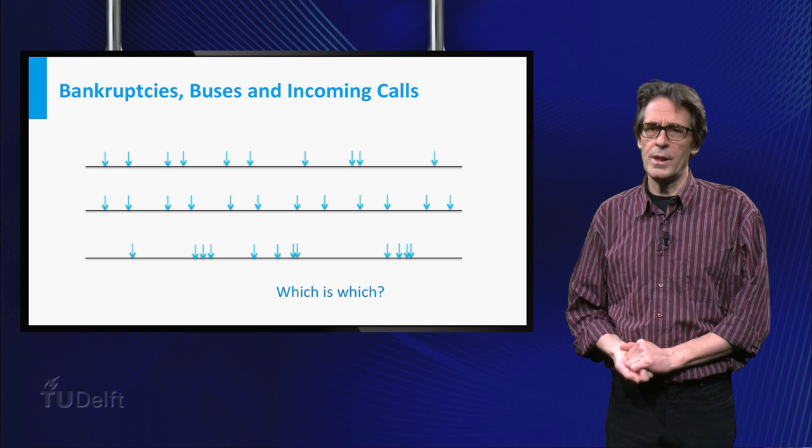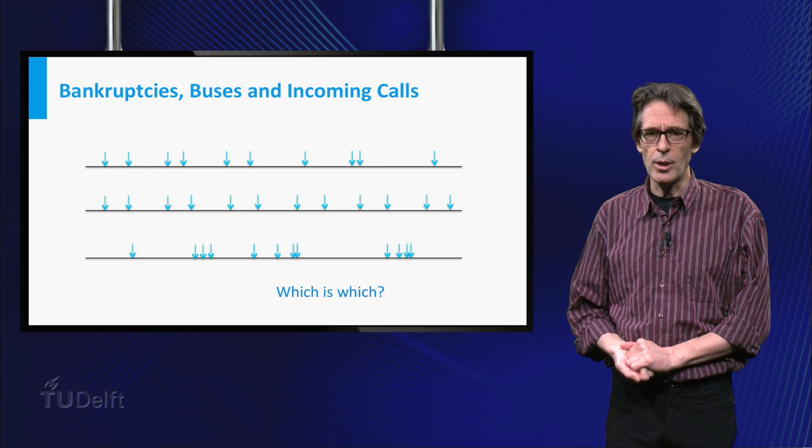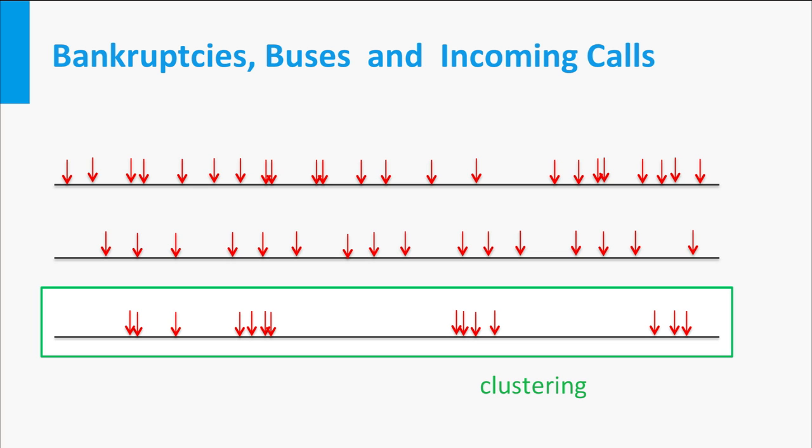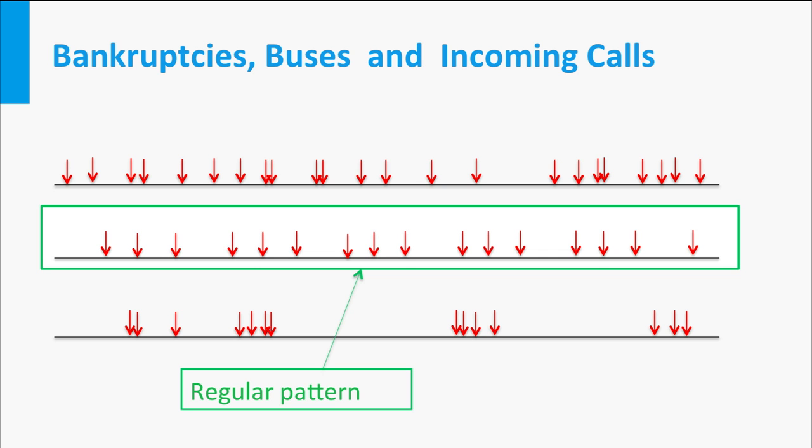Here are three more realizations of the same types of processes. The pattern that I think is present in the third timeline is that there seems to be clustering. Immediately after an event occurs, the probability of a next event increases. In the second timeline, apart from some noise, there seems to be a regular pattern.